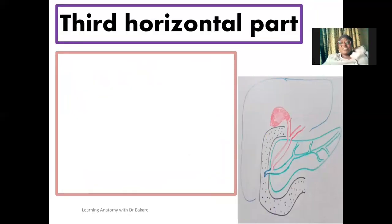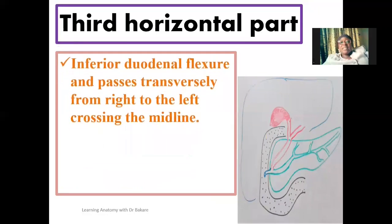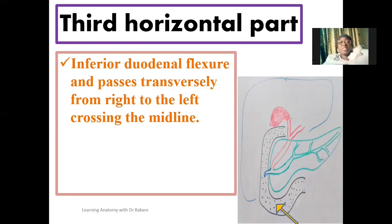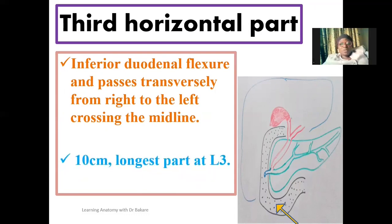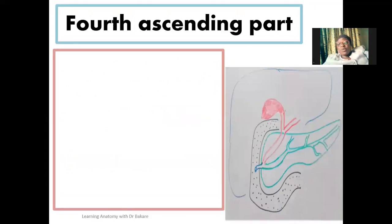The third horizontal part of the duodenum begins at the inferior duodenal flexure and passes transversely to the left, crossing the midline. This is about 10 cm in length — it is the longest subdivision of the duodenum — and it is seen at the level of the third lumbar vertebra (L3).